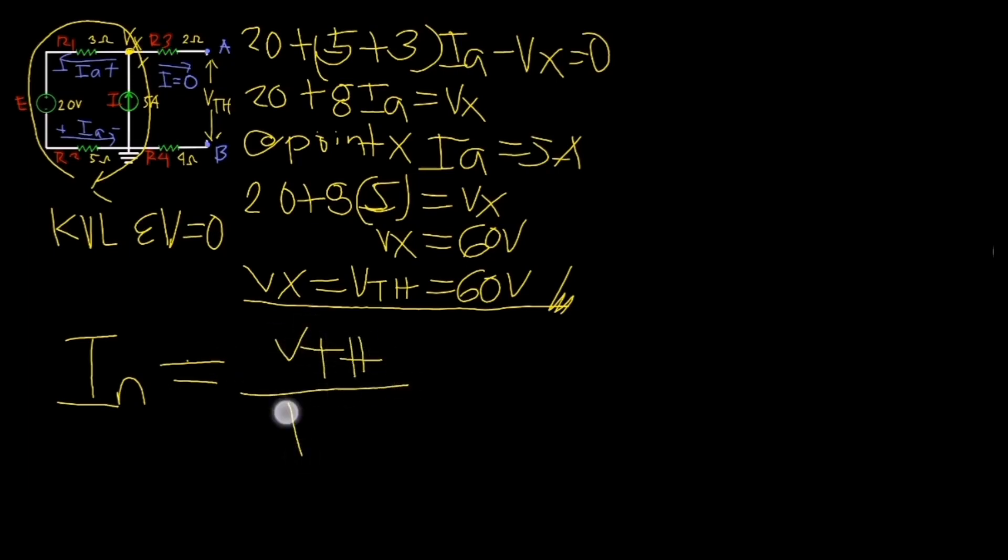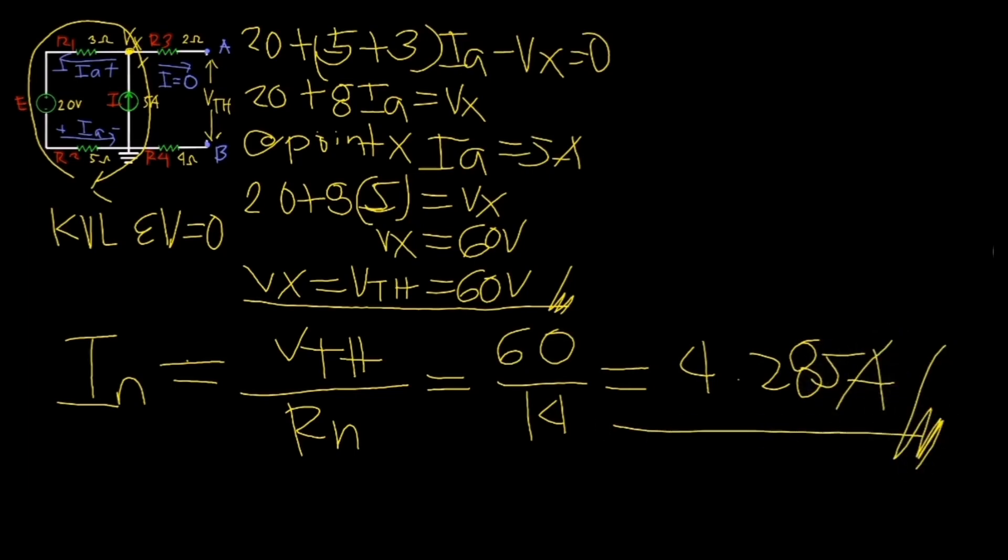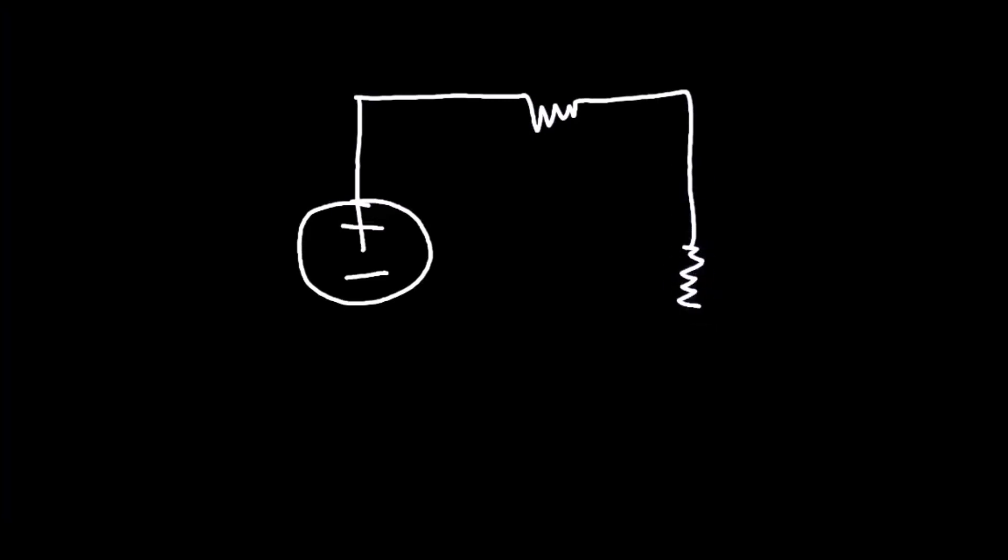Substituting values, In equals 60 divided by 14 ohms, yielding 4.285 amperes. So In can be solved by dividing the Thevenin's voltage Vth over the Norton's equivalent resistance. The final step is to redraw the circuit into the Norton equivalent circuit.